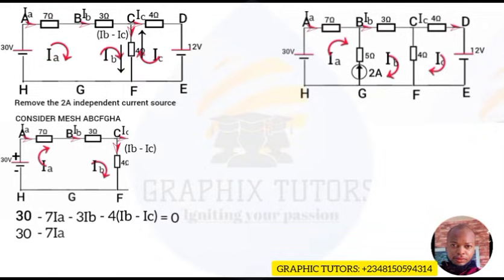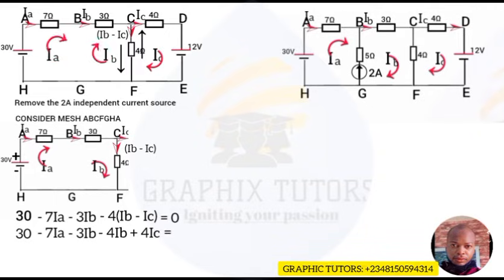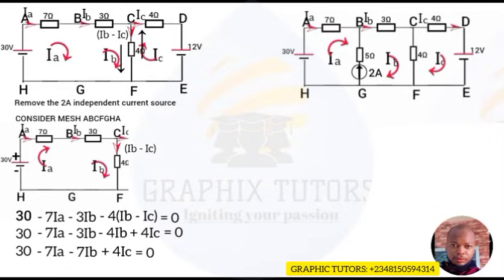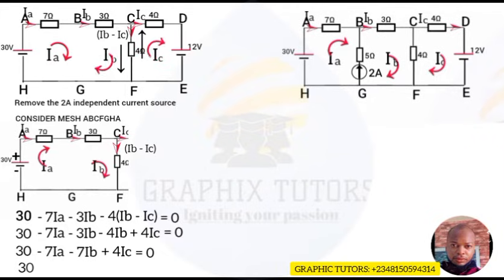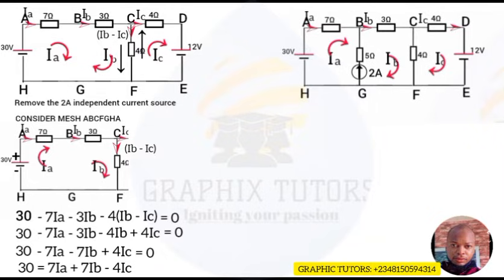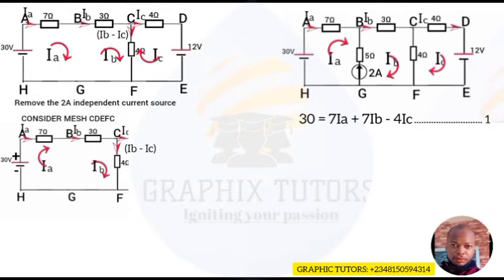Simplifying: 30 − 7ia − 3ib − 4ib + 4ic = 0. Collecting like terms: 30 − 7ia − 7ib + 4ic = 0. Taking the variable terms to the right-hand side gives: 30 = 7ia + 7ib − 4ic. I will call this Equation 1.